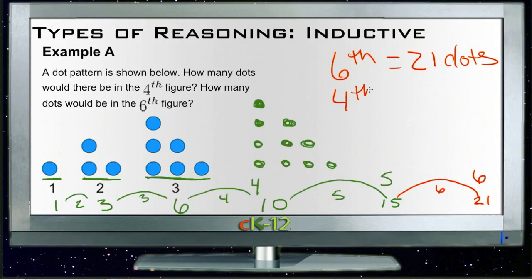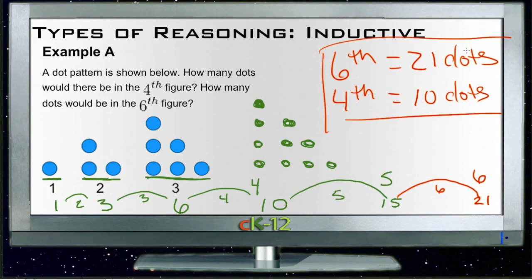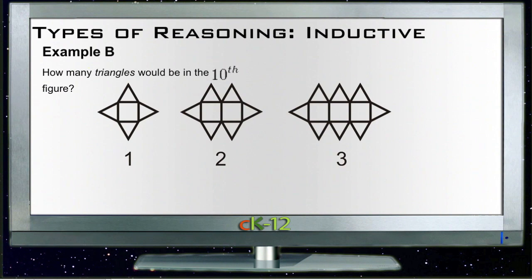Example B: How many triangles would be in the tenth figure? I want to come up with a pattern here because it'd be a lot of triangles to count if we drew these out all the way to 10. Figure 1 has one triangle on top and on the sides and the bottom - all four edges of one square.